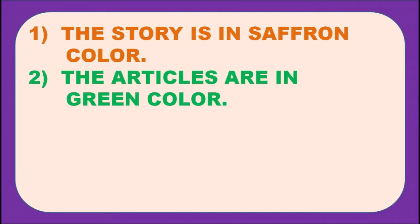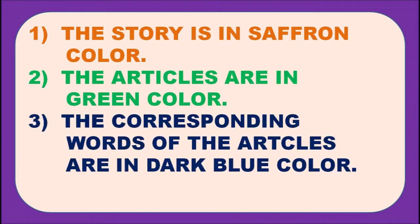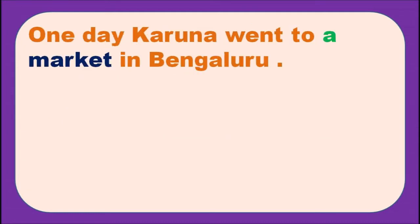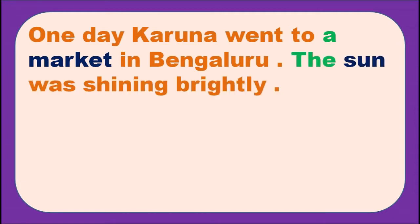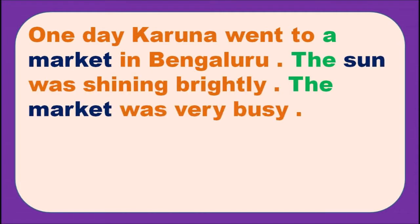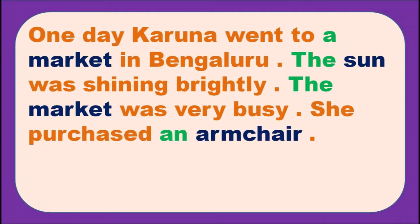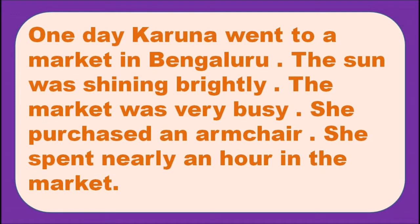The story is in saffron color, the articles are in green color, and the corresponding words of the articles are in dark blue color. One day Karuna went to a market in Bengaluru. The Sun was shining brightly. The market was very busy. She purchased an armchair and spent nearly an hour in the market.